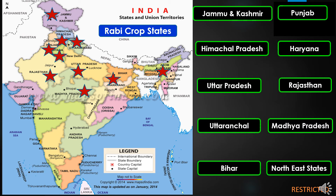Rabi crops are suitable for cool climates, so states like Jammu and Kashmir, Himachal Pradesh, Uttar Pradesh, Uttaranchal, Bihar, Punjab, Haryana, Rajasthan, Madhya Pradesh and the Northeast states are most suitable. These states are the major contributors to growing Rabi crops.